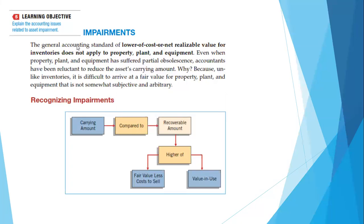Bagaimana cara mengakui impairment? Yang pertama perhatikan carrying amount, yaitu harga awal kita memperoleh aset tersebut. Kemudian kita bandingkan dengan recoverable amount, yaitu biaya untuk me-recovery aset tetap tersebut. Terus kita bandingkan tinggi yang mana. Kalau recoverable amount ternyata higher, maka kita lihat berapa impairmentnya dengan cara membandingkan antara fair value dikurangi cost to sell, kemudian value ketika digunakan. Kita bandingkan lebih tinggi yang mana, itu yang kita akui sebagai nilai impairment.